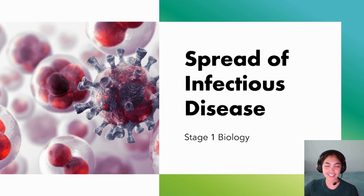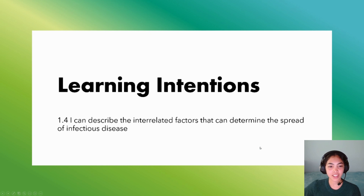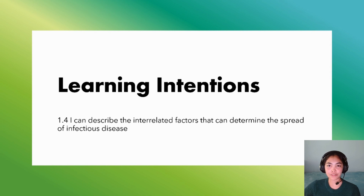We've had a look at how diseases can be transmitted from one person to another, but now we're going to look at how these actually spread to the wider population. Our learning intention for today is to describe the interrelated factors that can determine the spread of infectious disease.